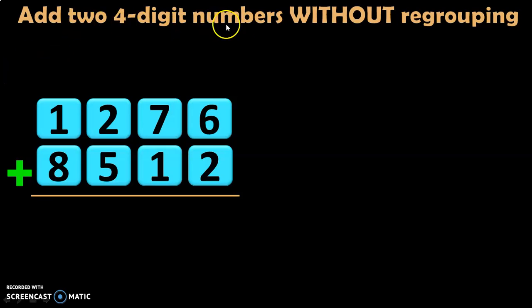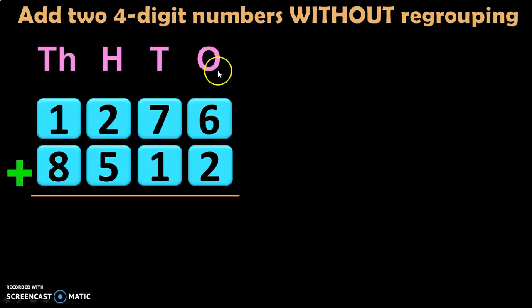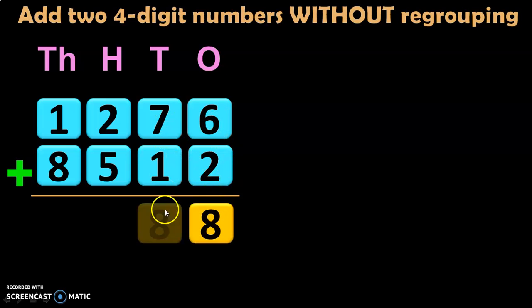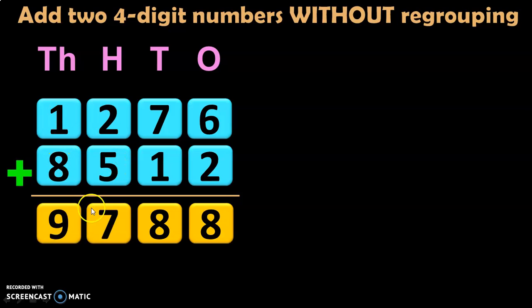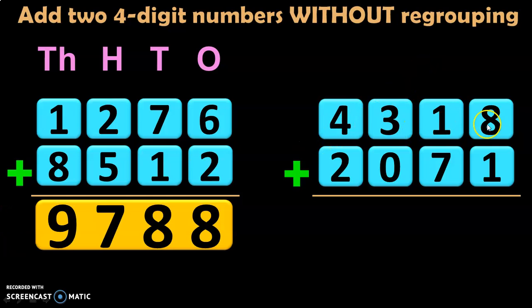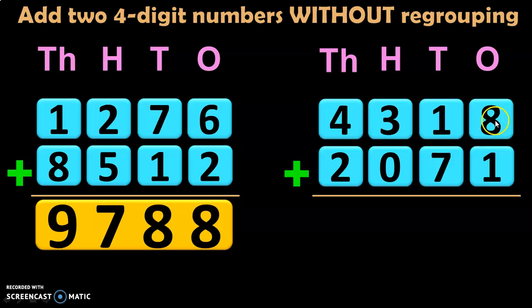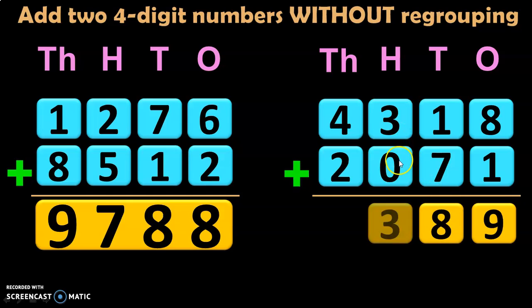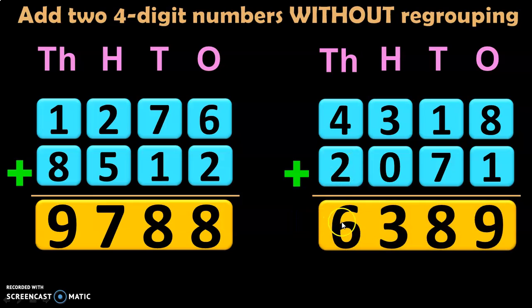Now let us do this topic: Add two four-digit numbers without regrouping. As we have covered all the previous topics, this addition is going to be very easy. We have 1276 plus 8512. 6 plus 2 is 8. 7 plus 1 is 8. 2 plus 5 is 7, and 1 plus 8 is 9. So, the answer is 9788. Let us do another example: 4318 plus 2071. 8 plus 1 is 9. 1 plus 7 is 8. 3 plus 0 is 3, and 4 plus 2 is 6. So, the sum of these two four-digit numbers is 6389.